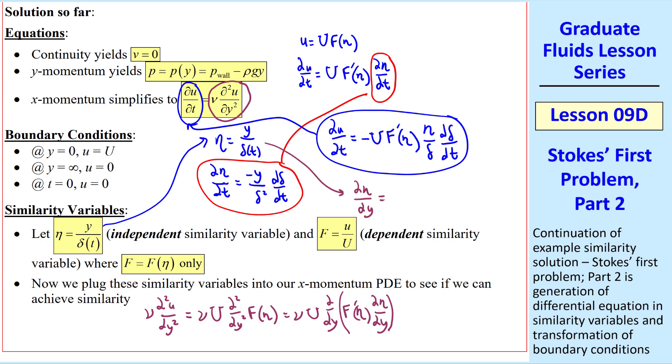And from here, ∂η/∂y is simply 1 over delta. So this becomes νU ∂/∂y of 1/δ F'(η). By the way, when we do these kinds of derivatives, we're employing the chain rule.